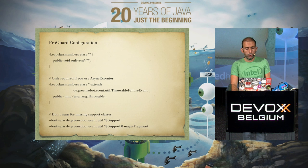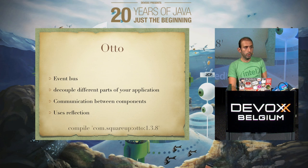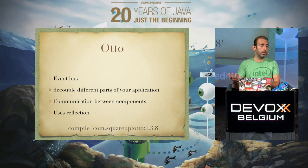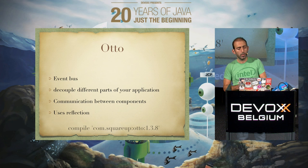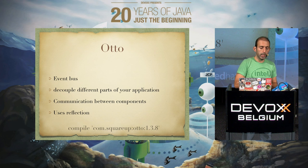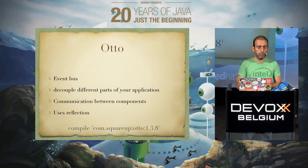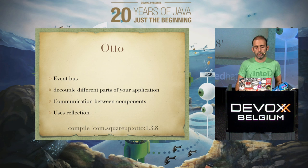Another alternative event bus is Otto, which is also very popular. Like all event buses, it helps you decouple your components or parts of your application. Otto does the same and also uses reflection to figure out which part of the code will be triggered.